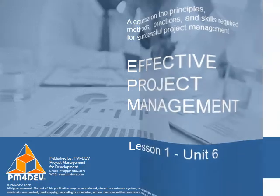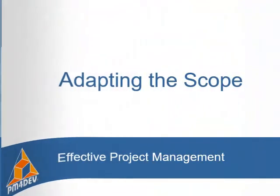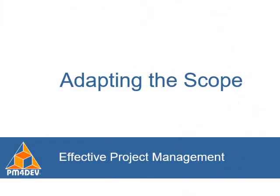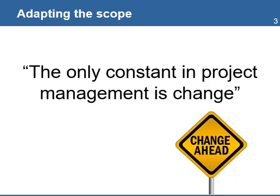Lesson 1, Unit 6: Adapting the Scope. Changes to project scope will occur in all projects. This is a constant in project management. Changes are not only to fix a problem, but also opportunities to adapt the scope and improve the performance of the project.